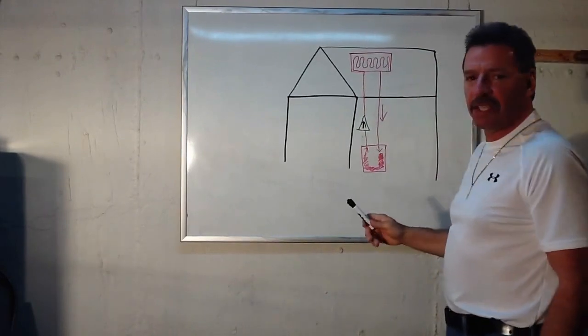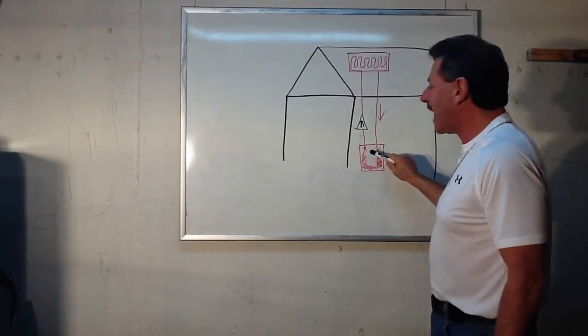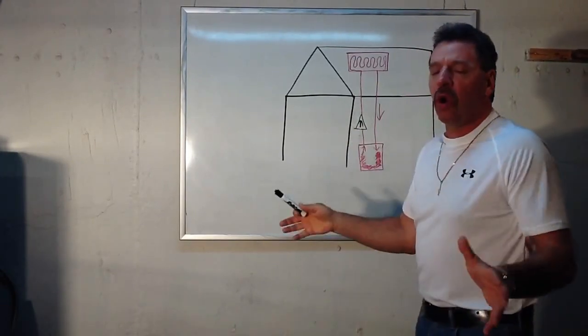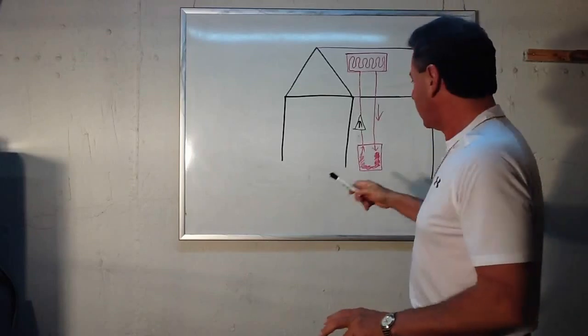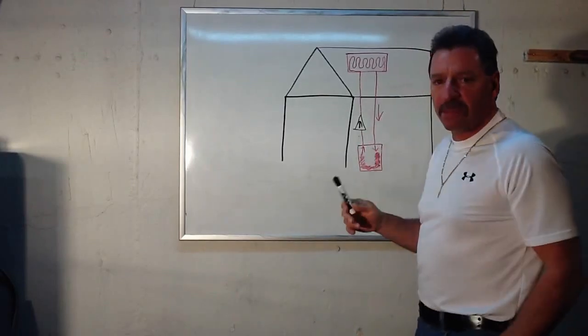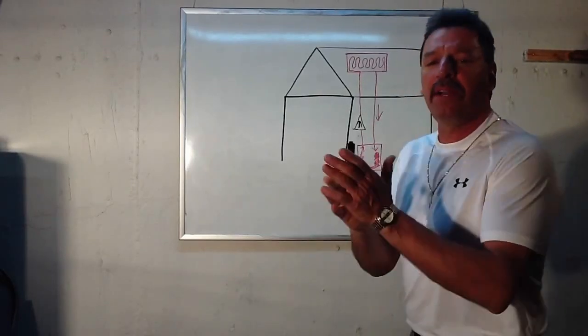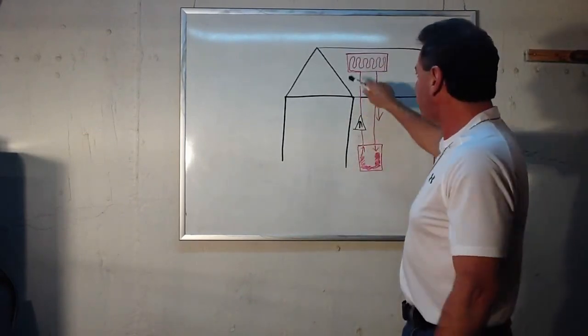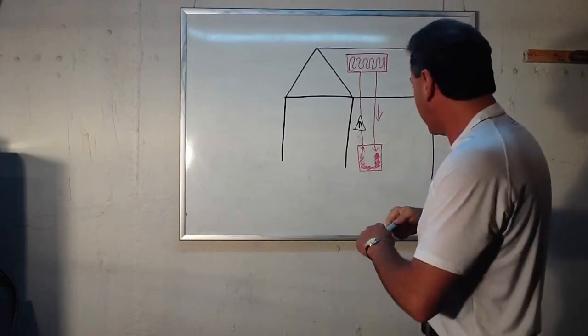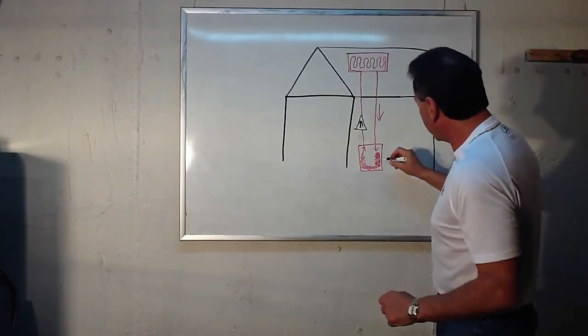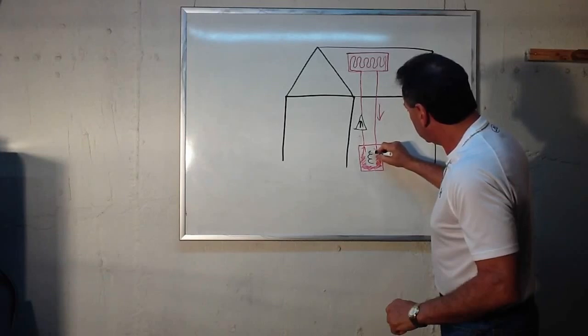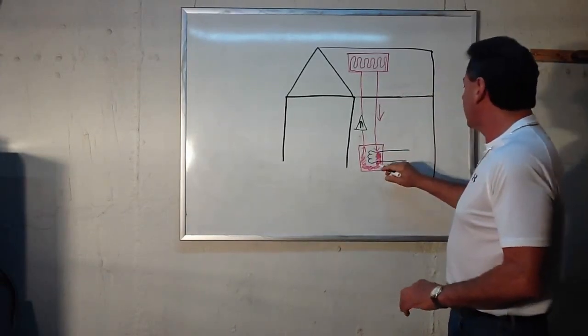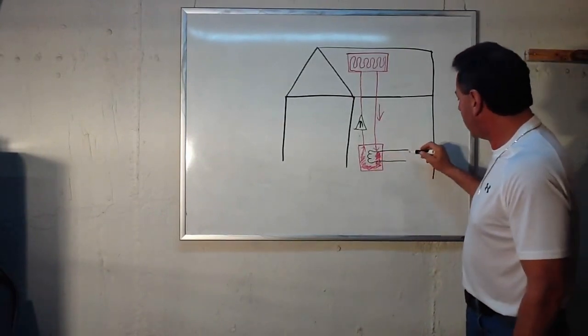But what's special about this heat exchanger is it has a second tank or a coil in it where the true cold domestic water that touches your skin goes into it and steals the BTUs and gets hot, but never actually touches the dirty glycol or the antifreeze. But it steals the BTUs from it and it gets hot. And that coil would look something like this inside that tank. So it's a coil inside the tank.